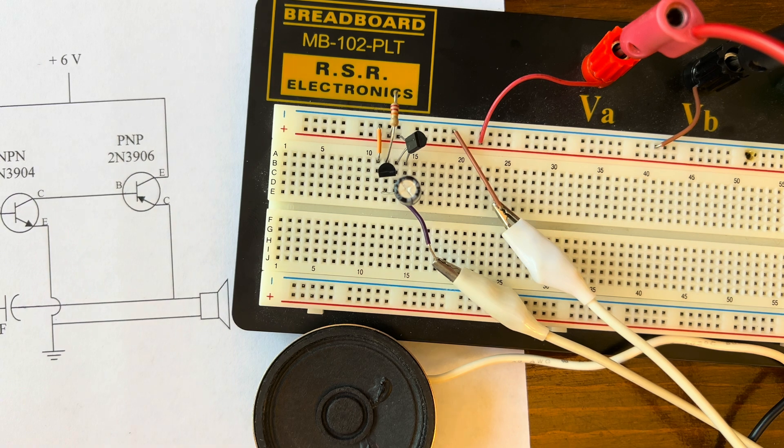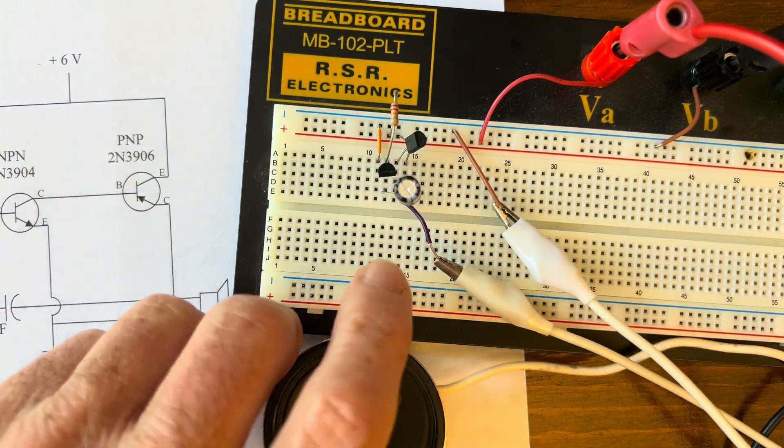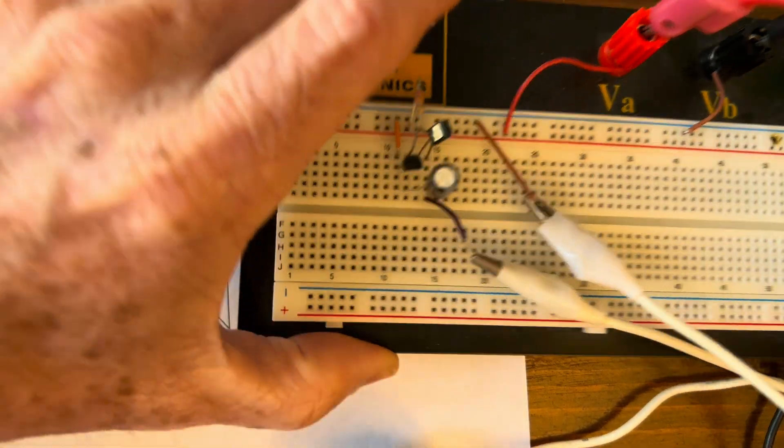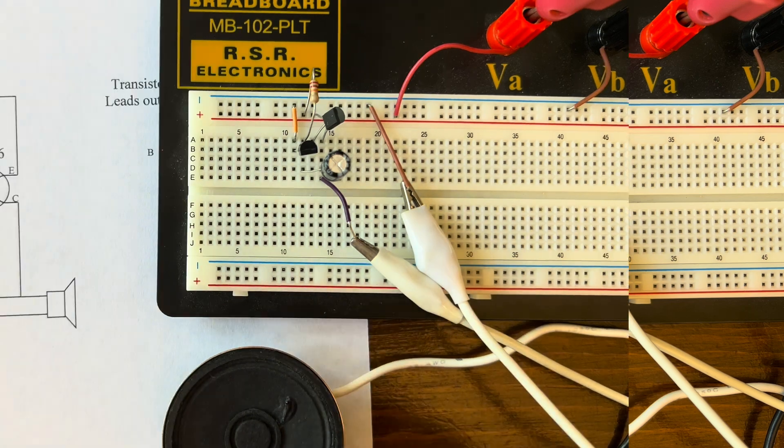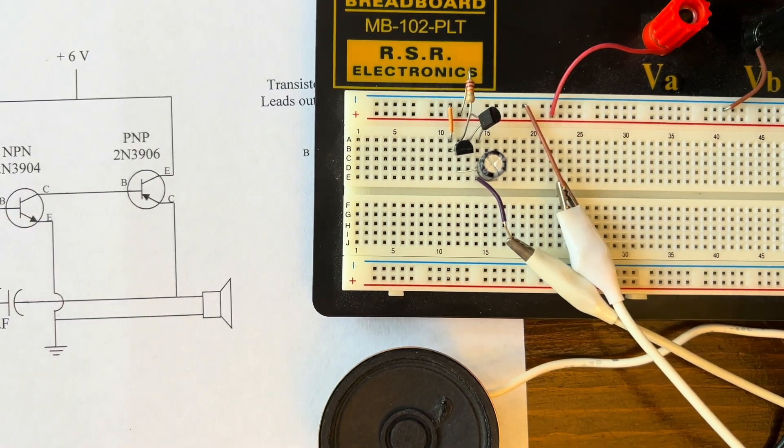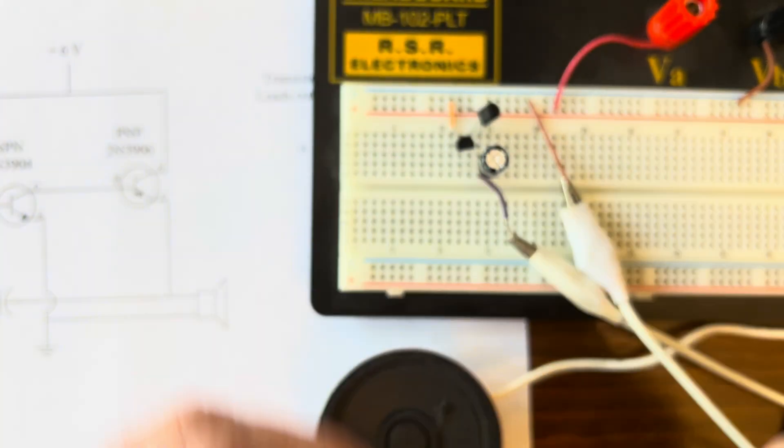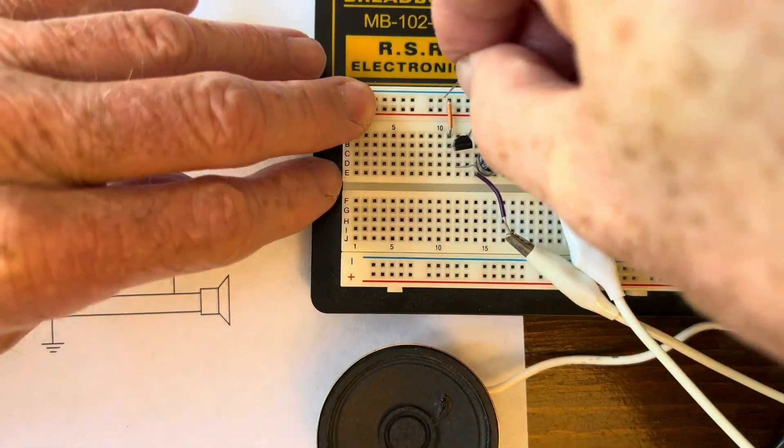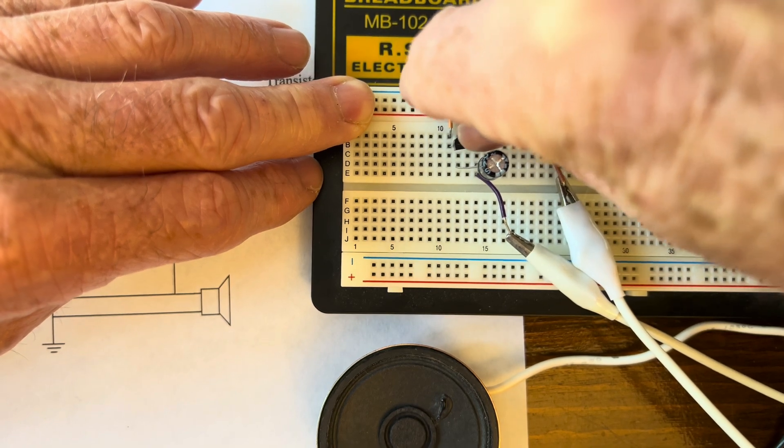So now all I want to do is I want to take and replace that 22,000 with a 10,000, which I have misplaced. Let me go grab another one. Now I'll just pull this out and we're just going to replace that 22,000 with a 10,000. So I'll put the base here right to my positive, spin it around. However, you can get it to work, make sure nothing's touching.